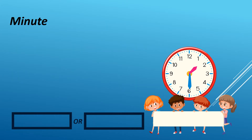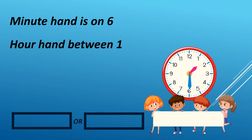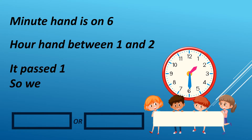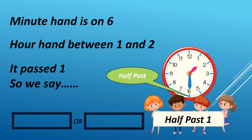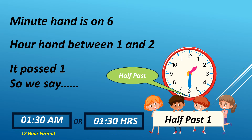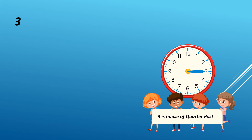When the minute hand is on 6 and the hour hand is between 1 and 2, it passed 1, so we say half past 1. It can either be AM or PM. For example, it is 1:30 AM in 12-hour format. We read it as 130 hours in 24-hour format.